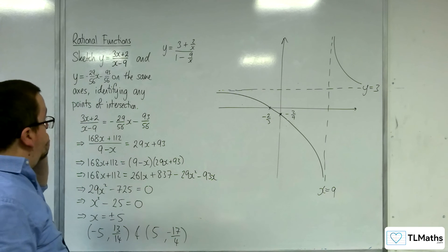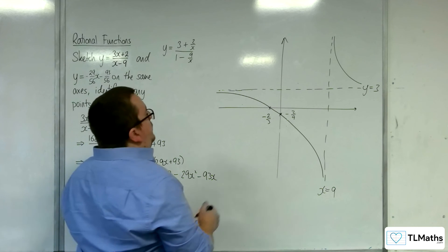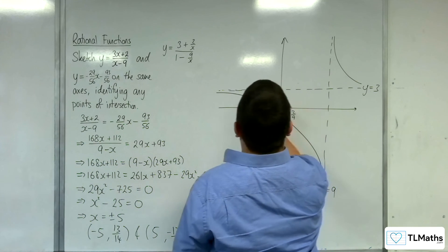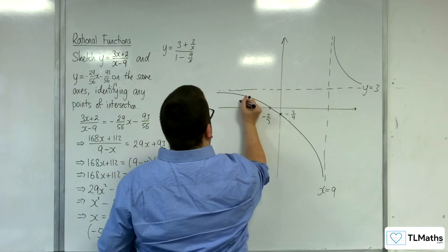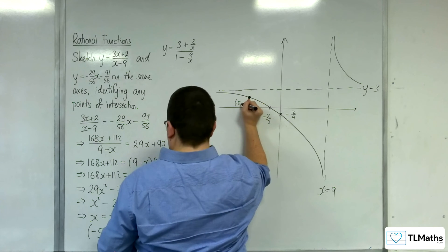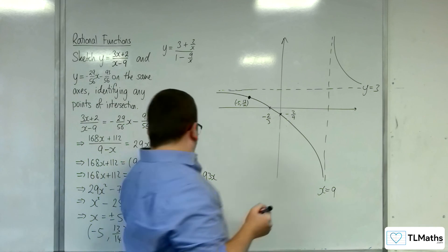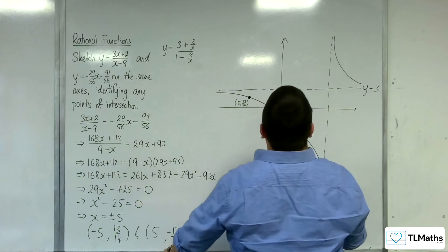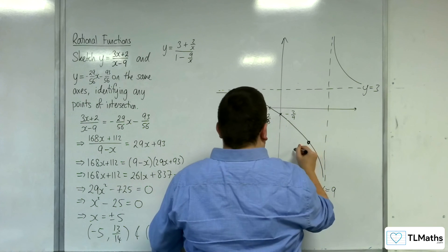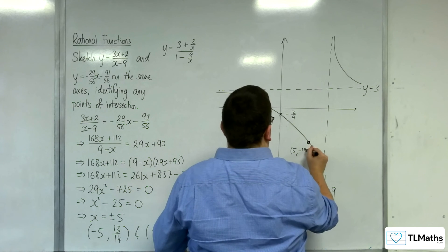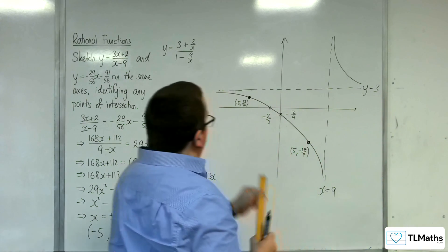So then, my two points. I've got the minus 5, 13 over 14. So somewhere around, well, let's say about there. So minus 5, 13 over 14. And 5 minus 17 over 4, rather. So it's going to be somewhere down here. So let's put it there. So 5 minus 17 over 4. And so my line goes through those two points.